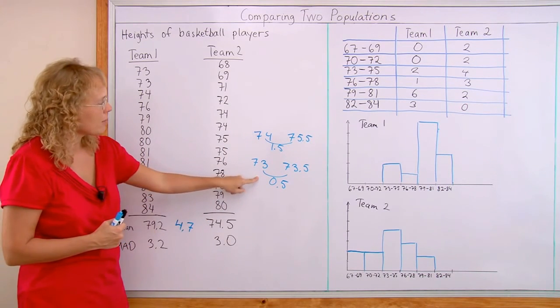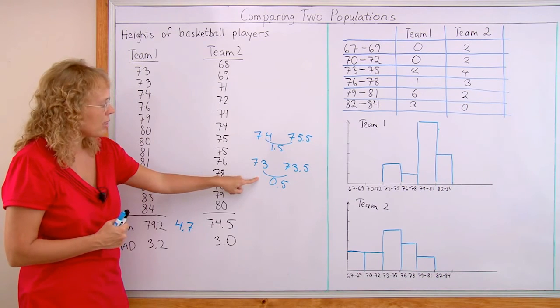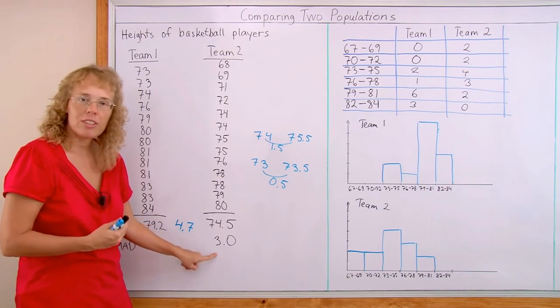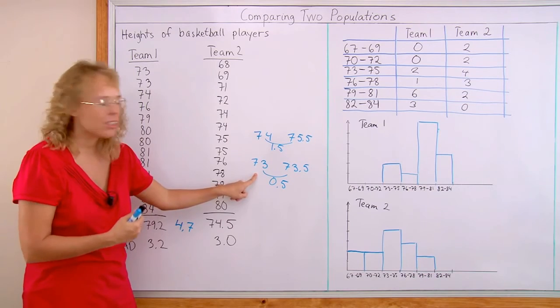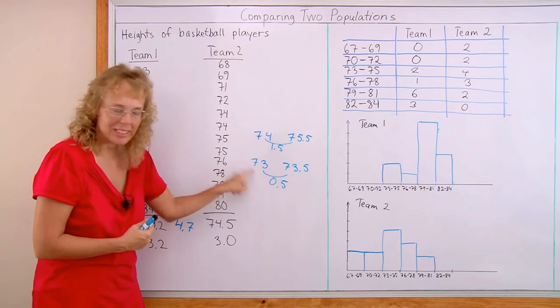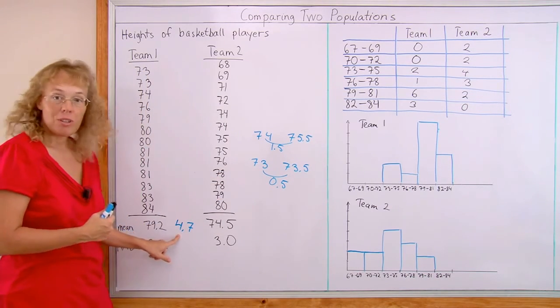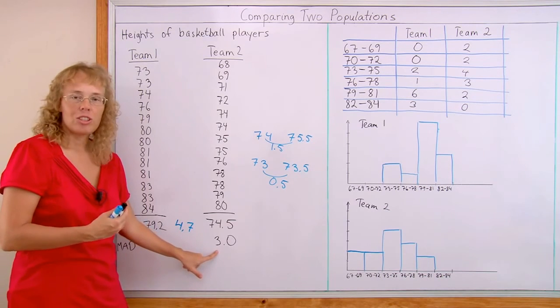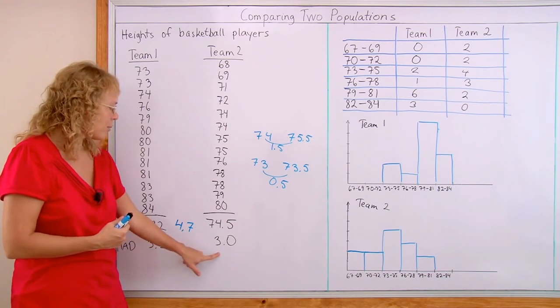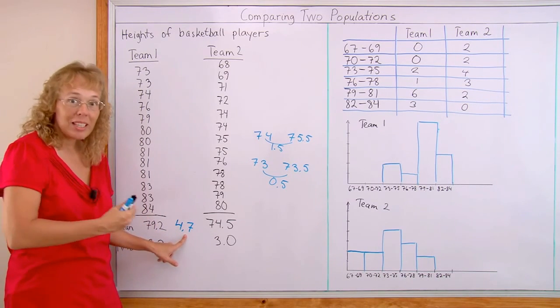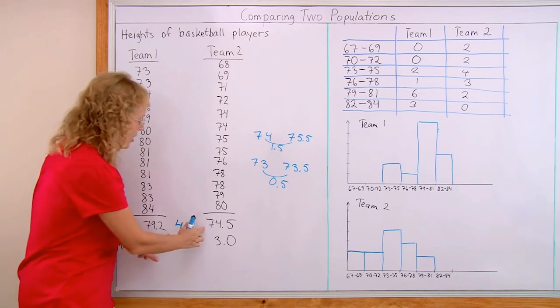Now this one, not so much. This one is only a fraction of the measure of variability. So there is no significant difference between these two means. And here, this is more than one times the measure of variability. About 1.5 times that. So yes, there is a big significant difference between the means of the two groups.